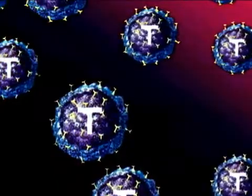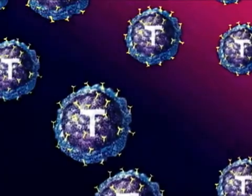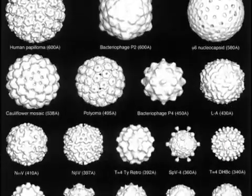HIV goes after the helper cells — the ones that secrete interleukin-2. Without that, you don't get the rapid cell division. I'm sure that just happened to show up in the rainforest somewhere as a freak of nature. No. Viruses are nanotechnology.